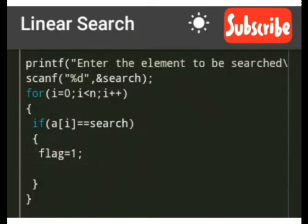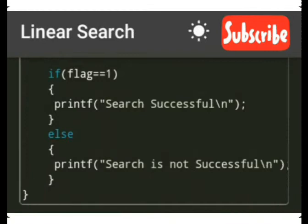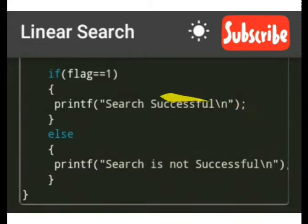So if flag equals 1, then printf write search successful, means to say that that search element is really found or present in the array. If it is not or flag equals 0, then the condition will be like this: printf search is not successful, and the curly braces are closed.